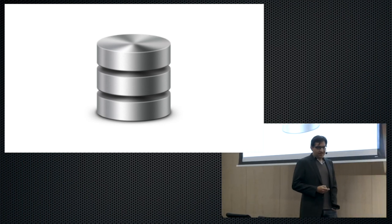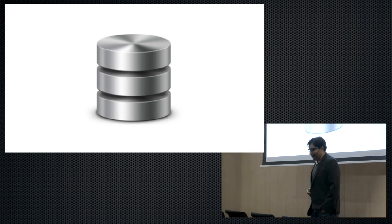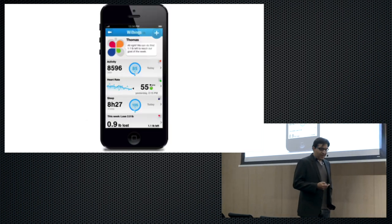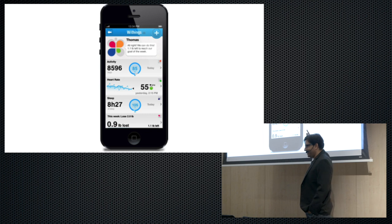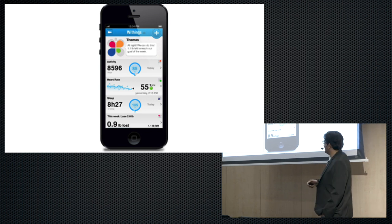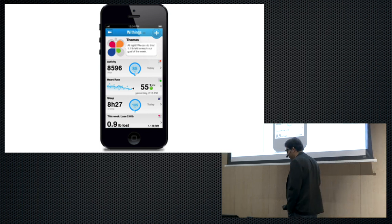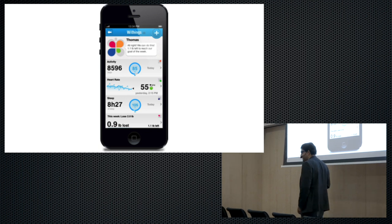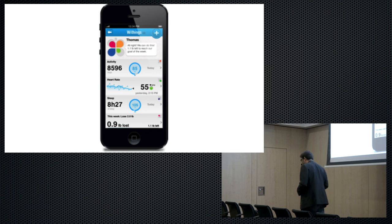How do we tie the data to the UI? We've got a framework called Core Data. These apps are nothing without data. You've got a nice app with all this information, but if there was no data, what would it be? It would be just a bunch of pixels with no information. The pixels and the presentation help you consume the data, but without the data, your app is nothing.